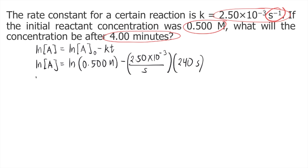We solve the right side of the equation using our calculator: Ln of 0.500 minus 2.5 times 10 to the negative 3 times 240. So Ln of A is equal to negative 1.293.